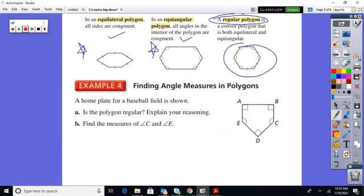Example four, finding angle measures in polygons. A home plate for a baseball field is shown. Is the polygon regular? So we look at this polygon. And as soon as we see, let's see, we have 90s, 90, 90. Then E and C are not 90 degrees.